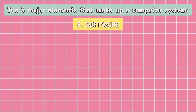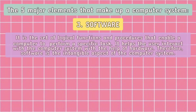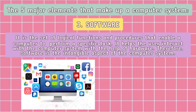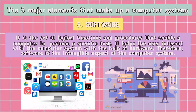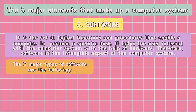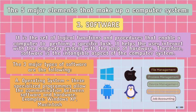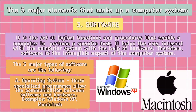The third element is the software. It is the set of logical functions and procedures that enable a computer to perform a specific task. It helps the user interact with the computer system with the help of hardware. Software is the intangible aspect of the computer system. The three major types of software are: number one, the operating system. These specialized programs allow the communication between software and hardware. Examples: Windows XP and Macintosh.